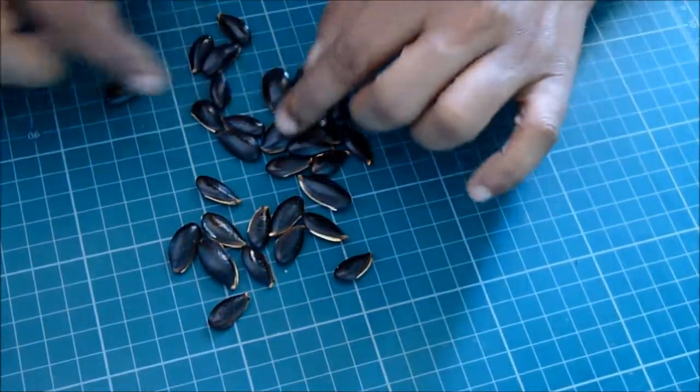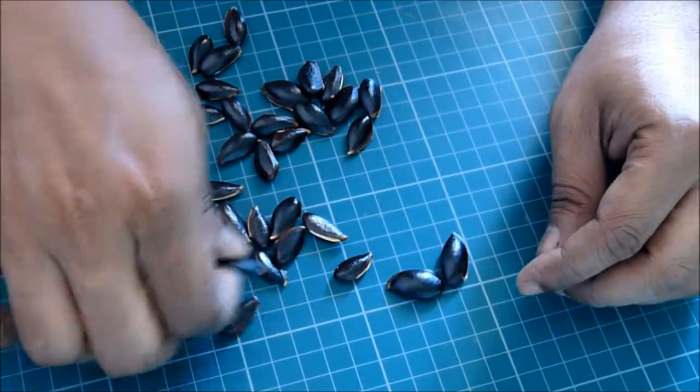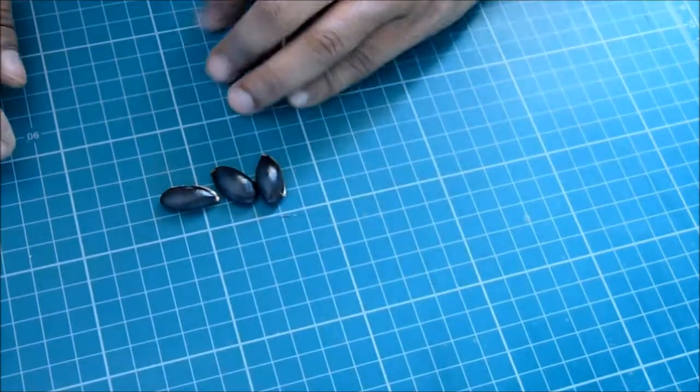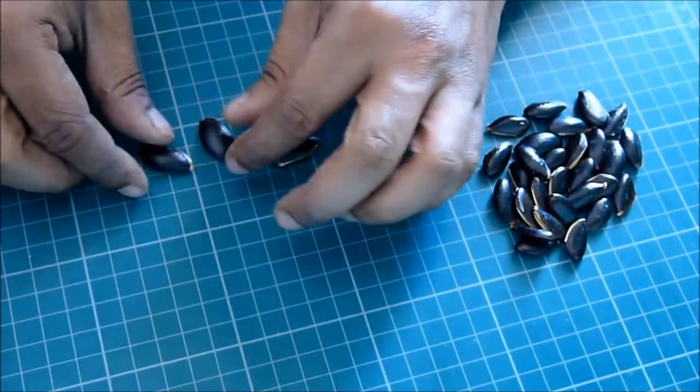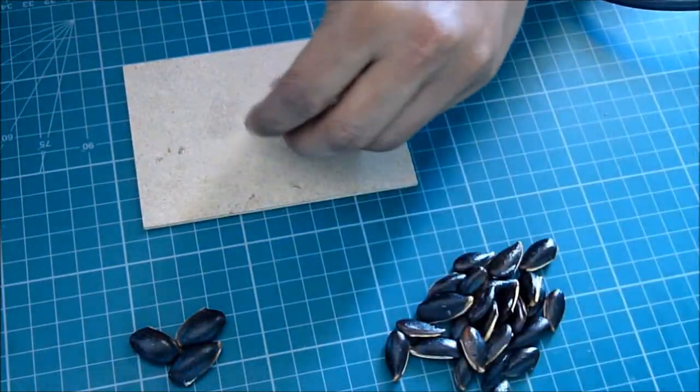Now from there, choose two big seeds to make the center necklace part. This will be used to make the locket of the center of the necklace.